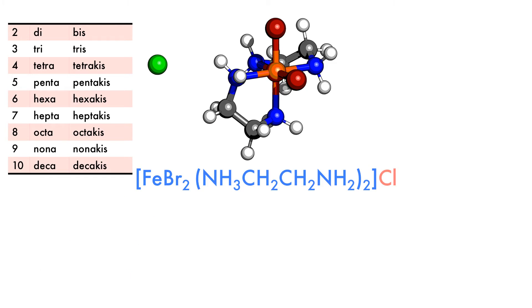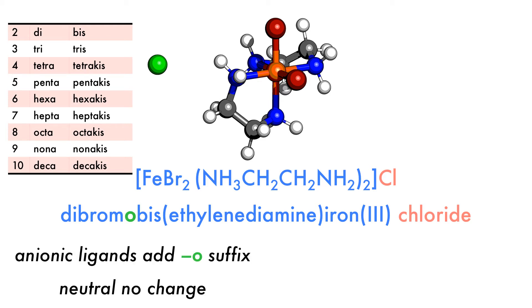When naming complexes, we use the prefixes in the third column for polydentate ligands, and so we get dibromo bisethylene diamine iron chloride. The bromide ligand becomes bromo because it is anionic, and the complex ligand ethylenediamine is placed in brackets because it already includes the di prefix, which also means we use bis rather than di.